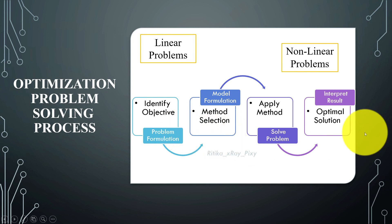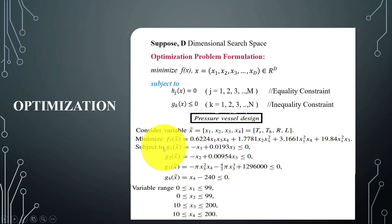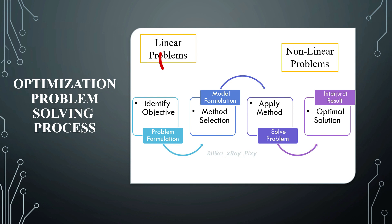There are different steps we can use to solve an optimization problem. First, identify the objective — that is, the goal. Define your objective function and constraints that need to be satisfied. For this engineering design problem, we have different constraints to satisfy and an objective function to minimize.